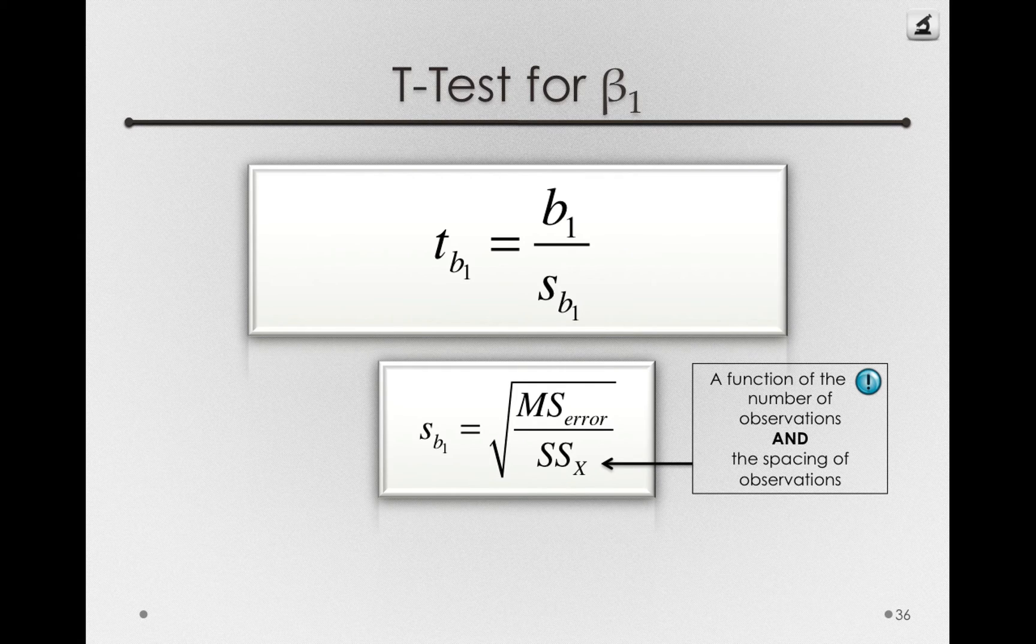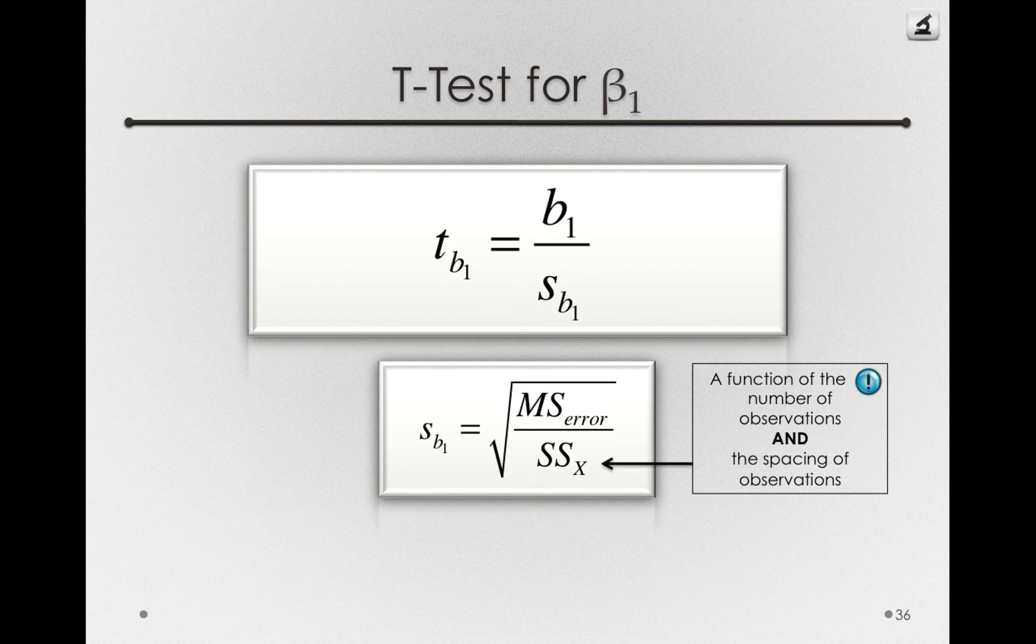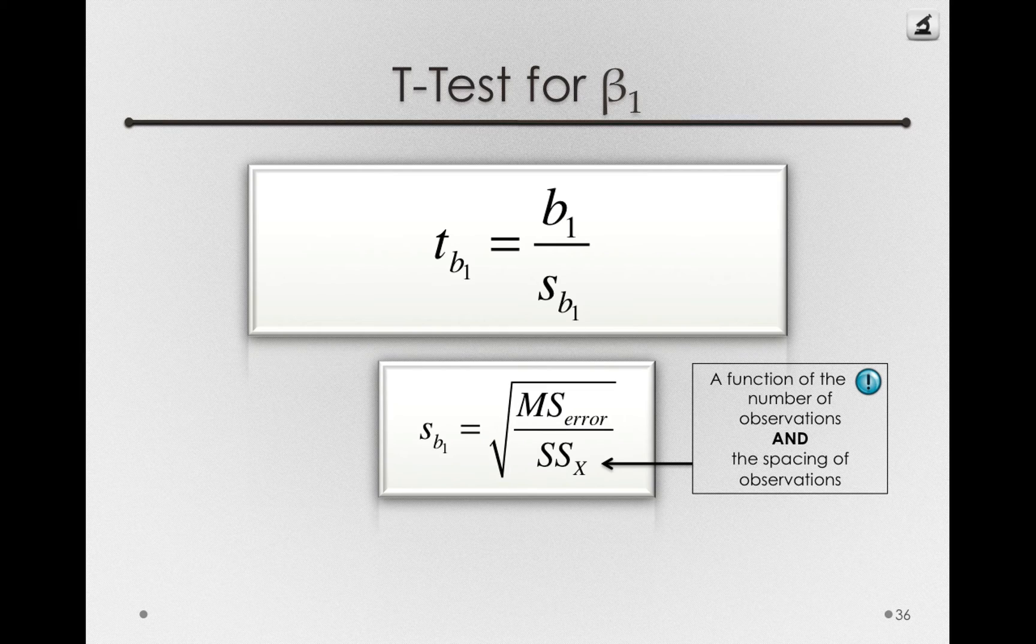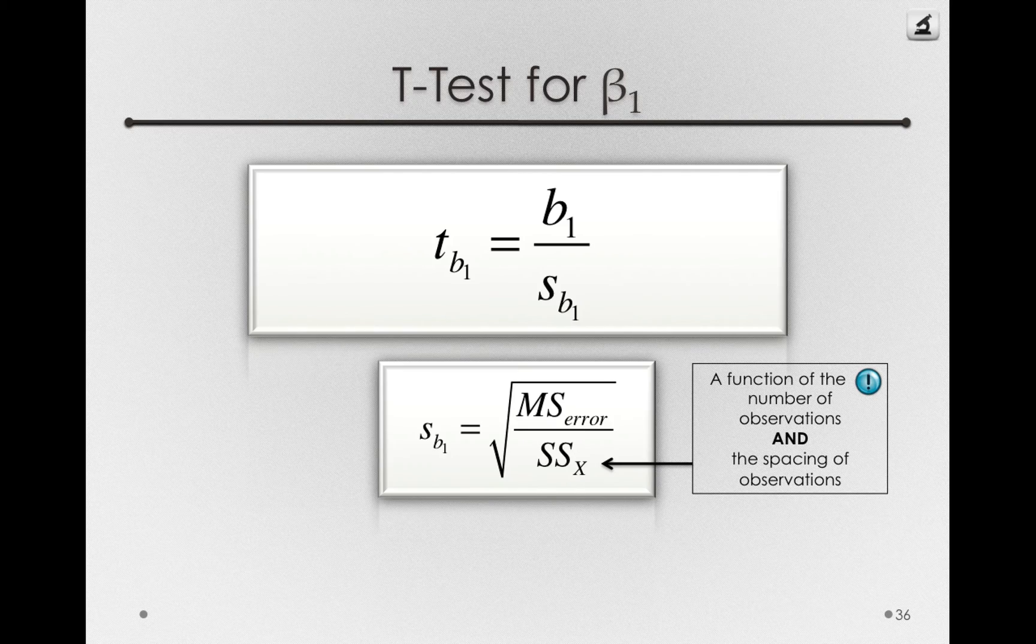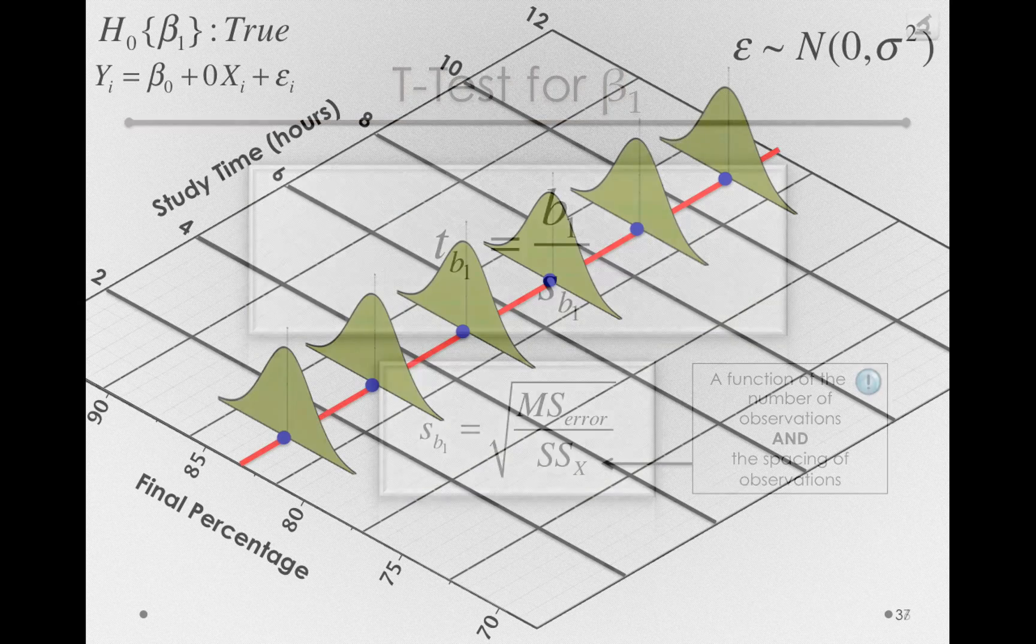Notice that the sums of squares for x is in the denominator here. So to the degree that the sums of squares for x are larger, the standard error of our estimate will be lower. That is, we'll get a more precise estimate of beta1 if we space the observations in the x-axis.